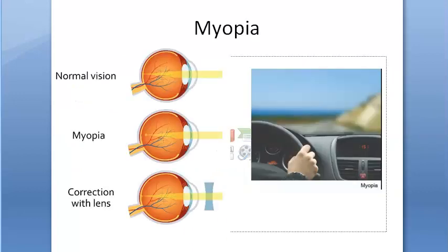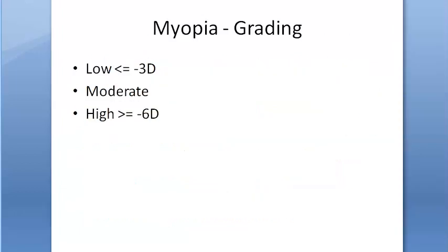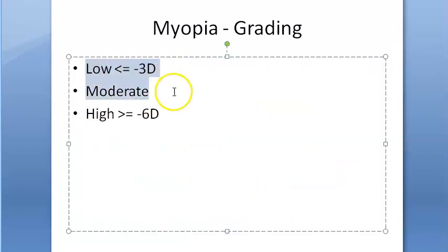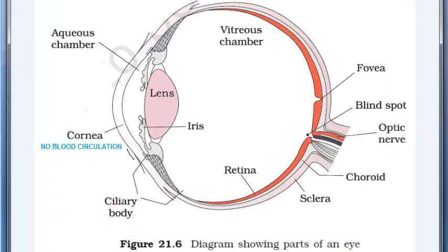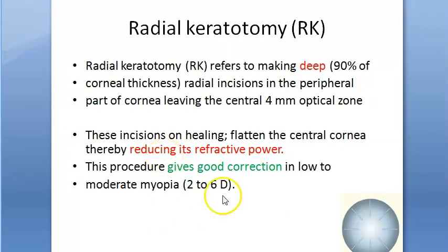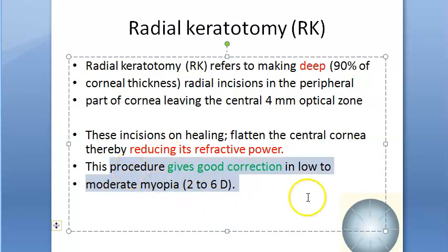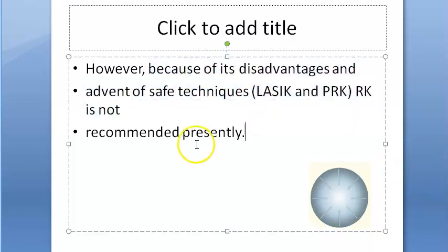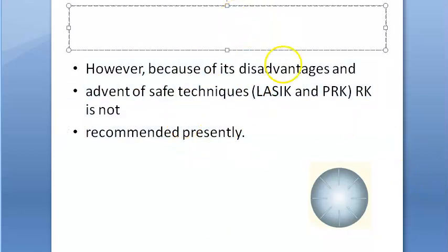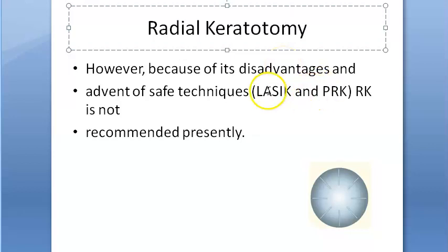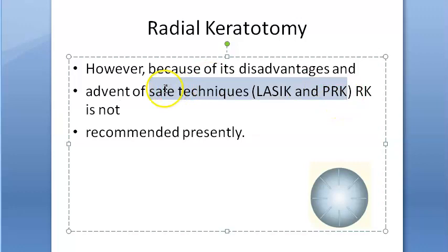Regarding the classification of myopia: low, moderate, and greater than or equal to 6 diopters will be high myopia. So radial keratotomy gives correction within 6 diopters - low to moderate myopia. Because of its disadvantages, they are not using RK now. They prefer safer techniques like LASIK and PRK. PRK stands for photorefractive keratectomy.